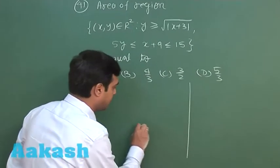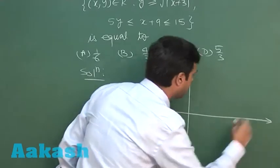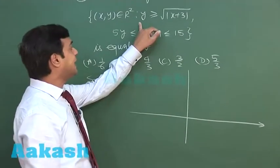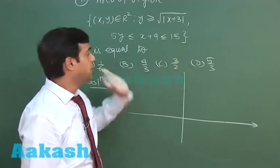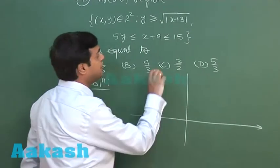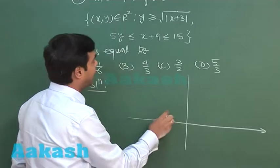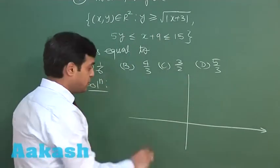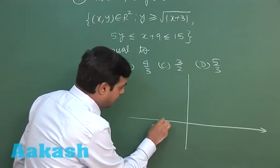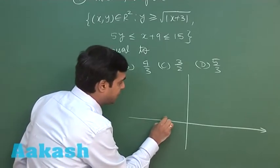As well as y greater than or equal to mod of root(x+3). If x is greater than minus 3, I can see the curve as y squared equals x plus 3, so it can be traced in this fashion.